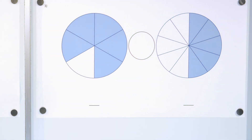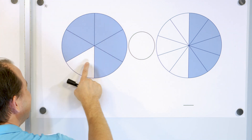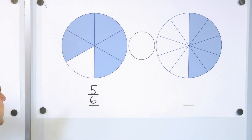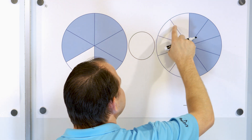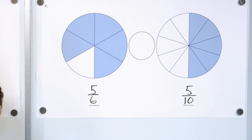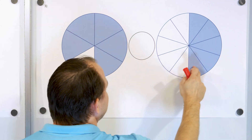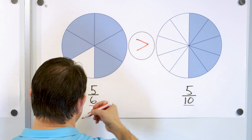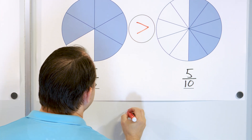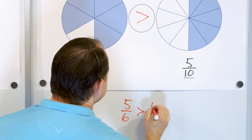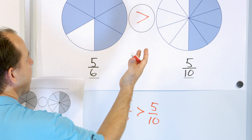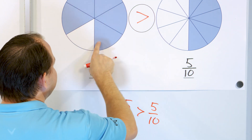Let's take a look at our next problem. We have 1, 2, 3, 4, 5 — 6 total slices, but we only have 5. So the fraction is 5 sixths. The second fraction is 1, 2, 3, 4, 5 out of 10 slices — so 5 tenths compared to 5 sixths. This one is bigger, this one is smaller. The arrow always points to the smaller number, so 5 sixths is greater than 5 tenths. I cannot figure out just by looking at these numbers which one's bigger — you have to draw a picture.